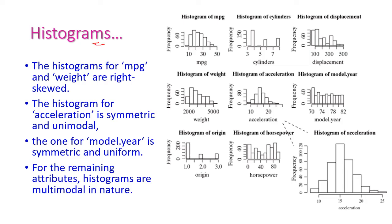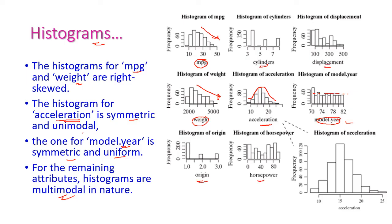Looking at histograms of different attributes: mpg and weight are right skewed. Acceleration is symmetric and unimodal. Model year is symmetric and uniform — almost all bins are the same size. Cylinder, displacement, origin, and horsepower are multi-modal.